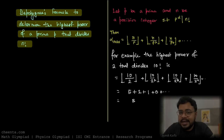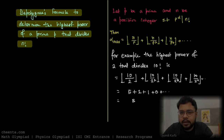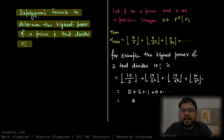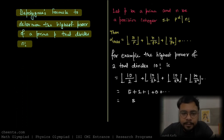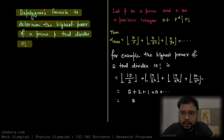The concept is De Polignac's formula. What De Polignac's formula helps us to do is find the highest power of a prime that divides a factorial number.